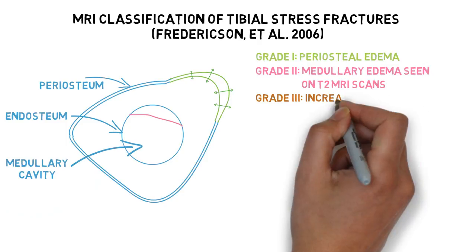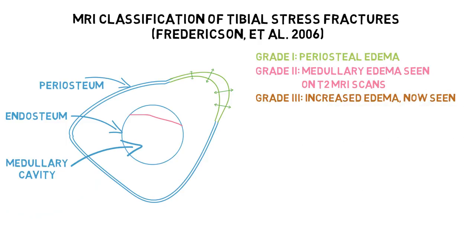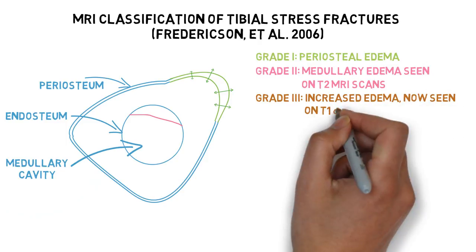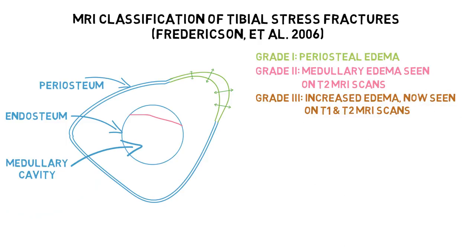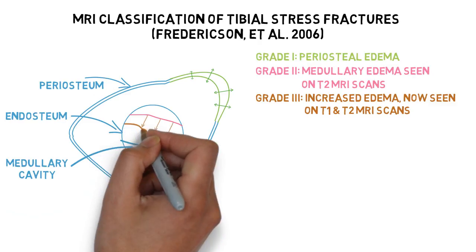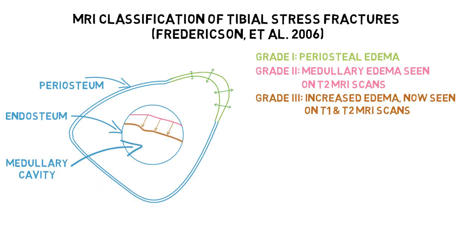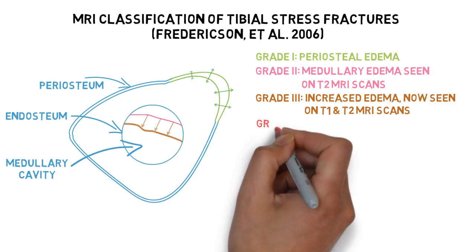Grade 3 describes edema being seen on both T2 and T1 weighted images. Compared to a T2 image, on T1 the edema will be dark and harder to differentiate from normal structure. But now the area of edema is larger, so it is easier to see.